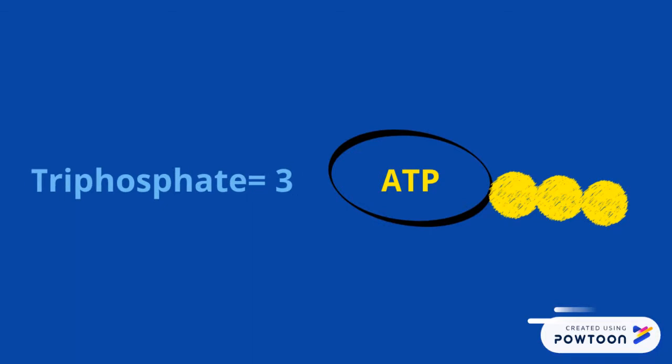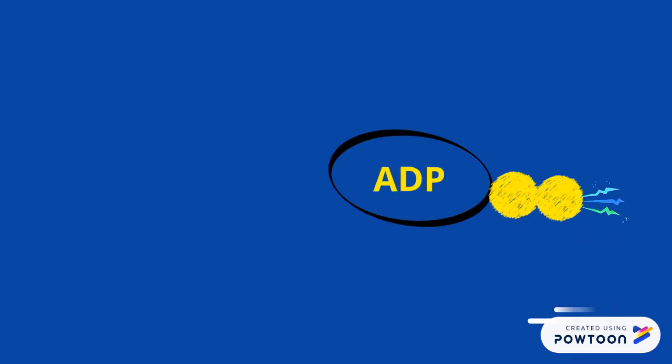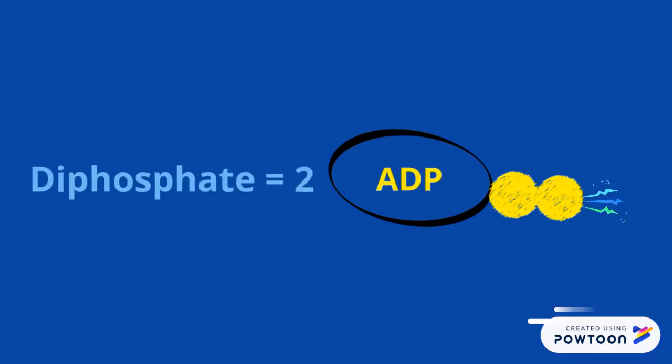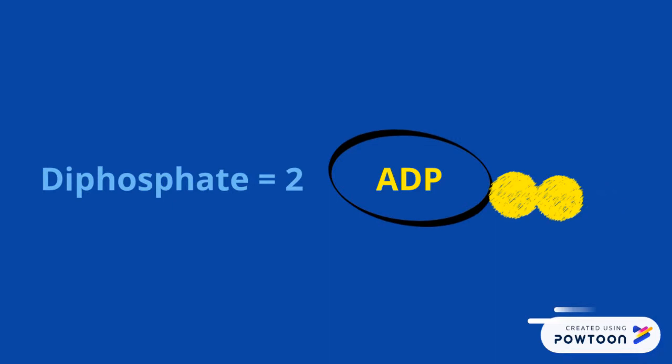When one phosphate falls off, energy is released, and it becomes ADP, or adenosine diphosphate, with two phosphates.